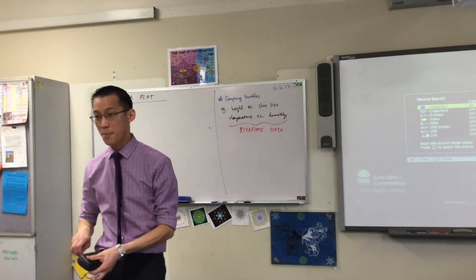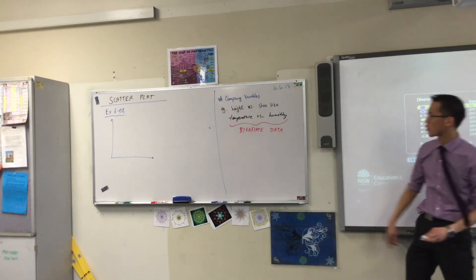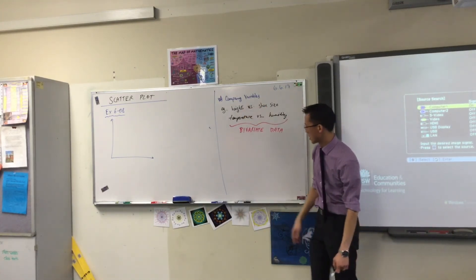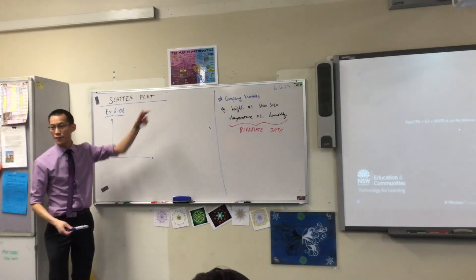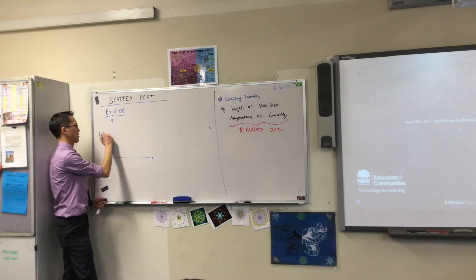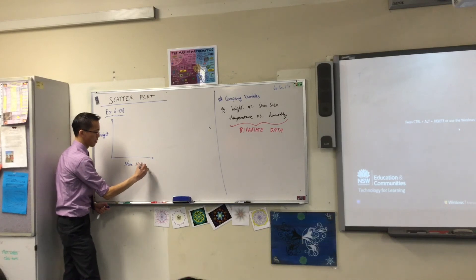You've got your axes there on your page. The examples we were talking about before, let's go for one of these. Height versus shoe size. So we've got two axes here, each one is named after one of the variables. I might have height over here and shoe size over here.